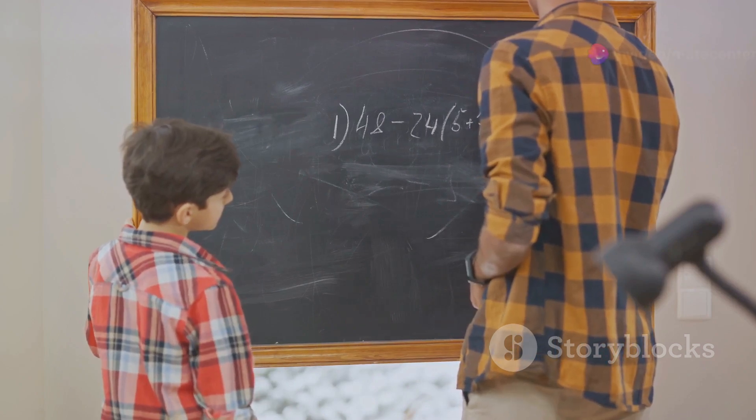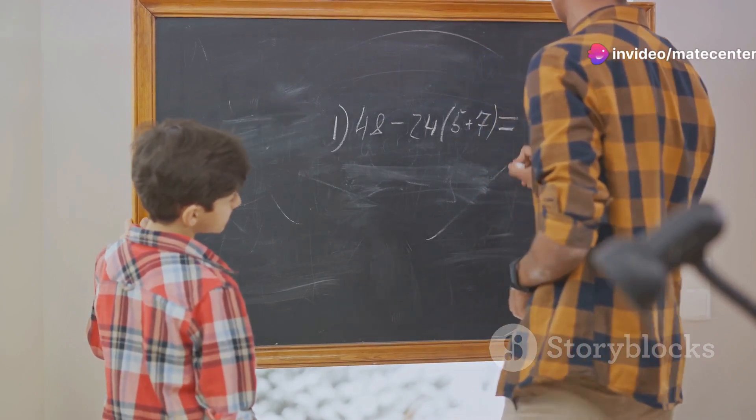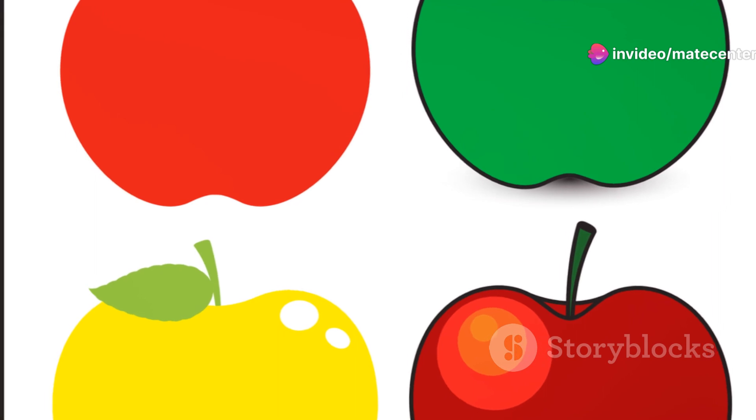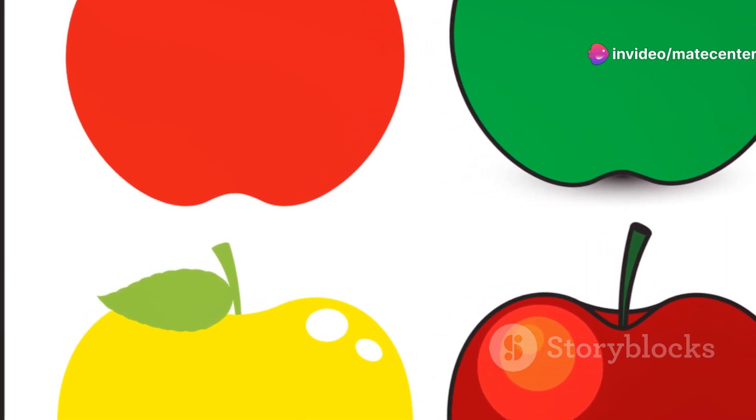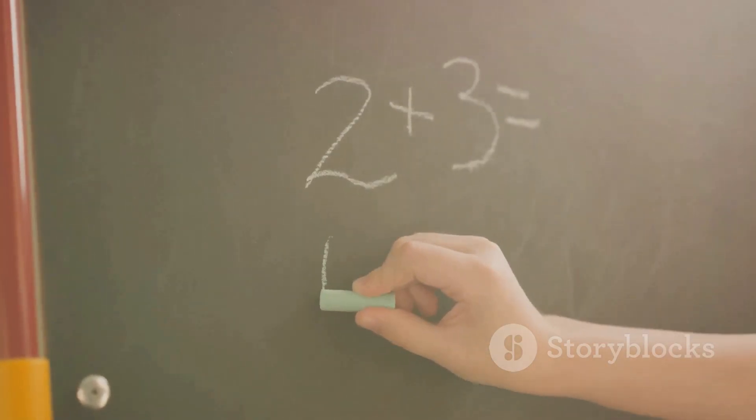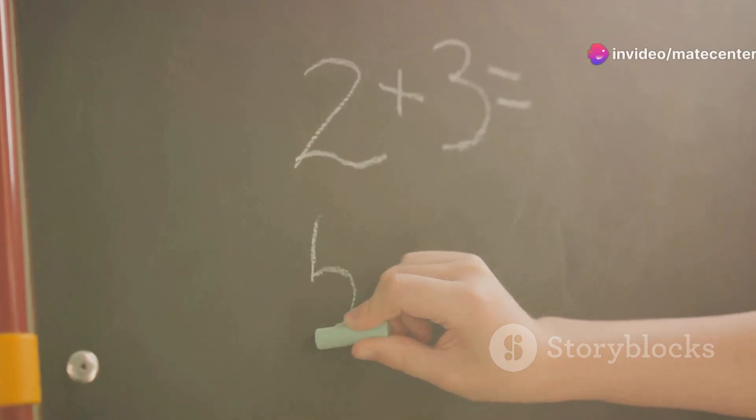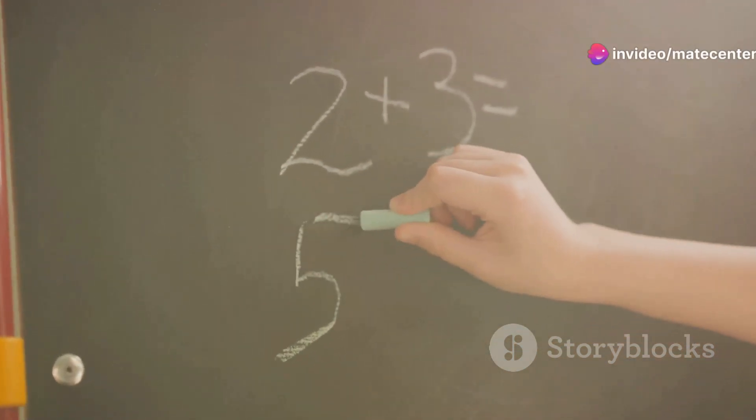Now you might be wondering, can fractions represent more than a whole? Absolutely. If we have five parts of an apple, where each apple is divided into four parts, we'd represent it as five-fourths, or in symbols, 5/4. This is what we call an improper fraction, where the numerator is greater than the denominator.